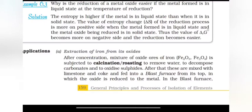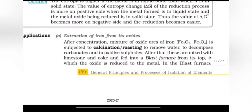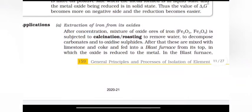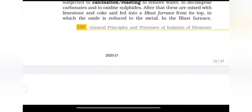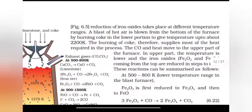Extraction of iron from its oxides. After concentration, mixture of oxides of iron is subjected to calcination or roasting to remove water, to decompose carbonate and to oxidize sulfides. After that these are mixed with limestone and coke and fed into a blast furnace from its top in which the oxide is reduced to the metal in the blast furnace. Reduction of iron takes place at different temperature ranges.